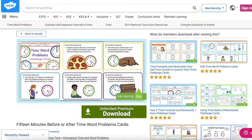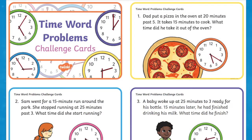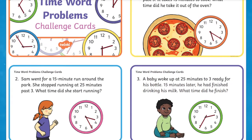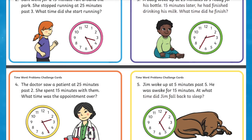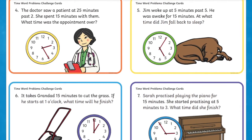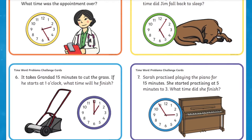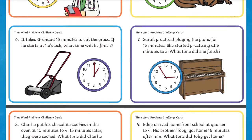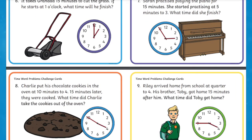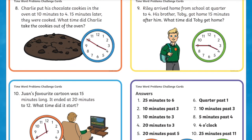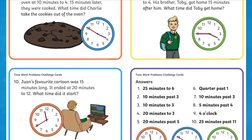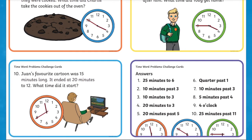Finally, let's take a look at the 15 Minutes Before or After Time Word Problems cards. You can give these cards to pupils so that they can apply what they have learnt about telling the time. The cards require children to tell the time to the nearest five minutes and include questions that ask pupils to find the start time or the end time in a given scenario. Pupils could use clocks to support their thinking as they solve these word problems. All the answers are included in the pack so that you can quickly and easily mark their work.